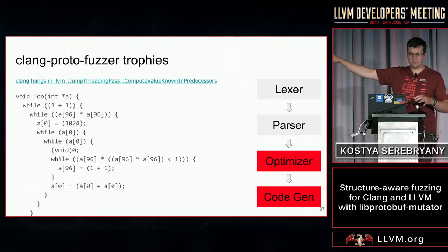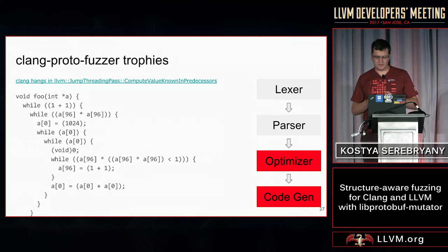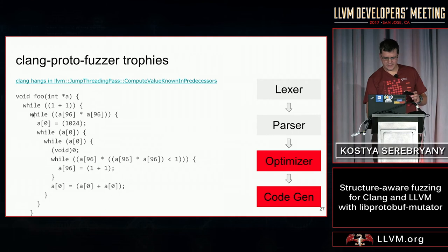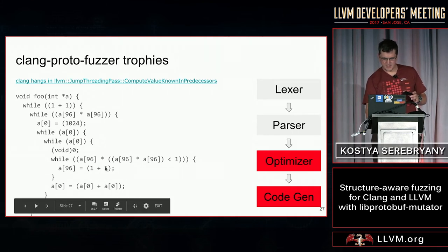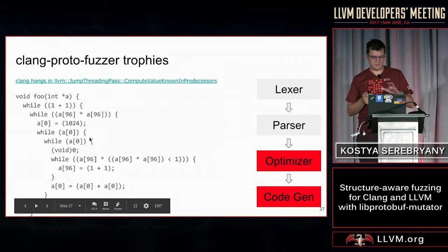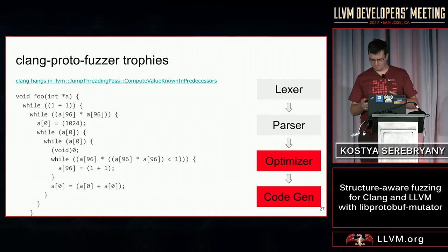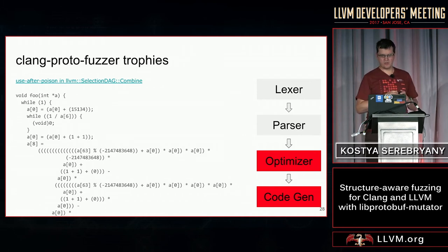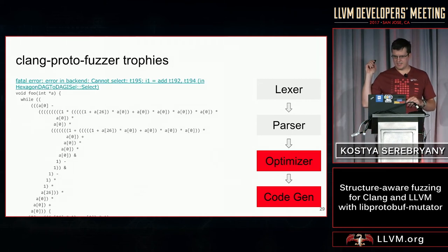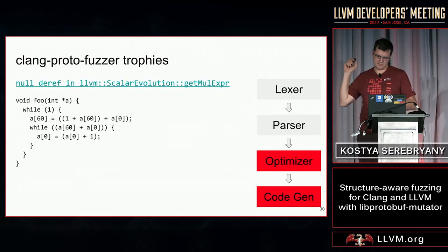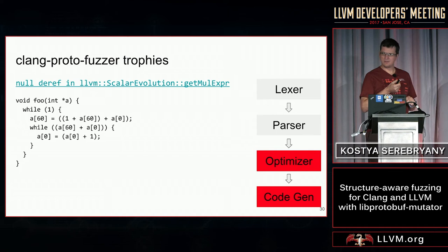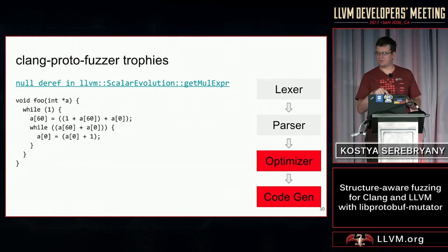This is a typical example generated from my protocol buffer — lots of while statements, assignment statements, and some binary operations. This particular case caused clang to hang in jump threading. Here is another case that caused use-after-poison in SelectionDAG. This one caused a fatal error. And my favorite — found on Monday — was actually a regression caught within a couple of days after the buggy commit went in. It's a null reference in scalar evolution.